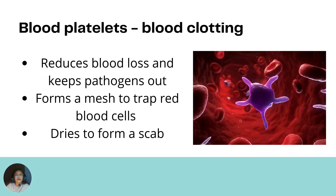Blood platelets are not exactly true cells, but fragments of cytoplasm from certain bone marrow cells. They play a part in the clotting of blood — reducing blood loss, keeping pathogens out, and forming a mesh to trap red blood cells which eventually forms a scab. So whenever you suffer an injury, blood platelets work to clog the blood and prevent blood loss.